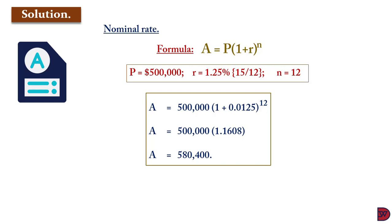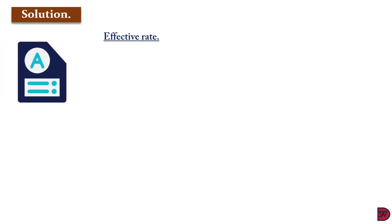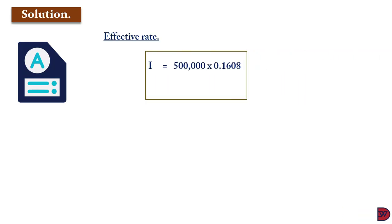The interest compounded on the principal of $500,000 is $580,400 minus $500,000, giving us $80,400. So a principal of $500,000 at a nominal rate of 15% compounded per month results in $80,400 interest. If we use the effective rate of 16.08% calculated earlier, we simply multiply it by the principal of $500,000, and it also gives us $80,400 — the same result.